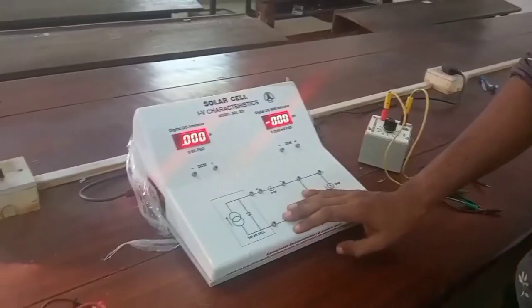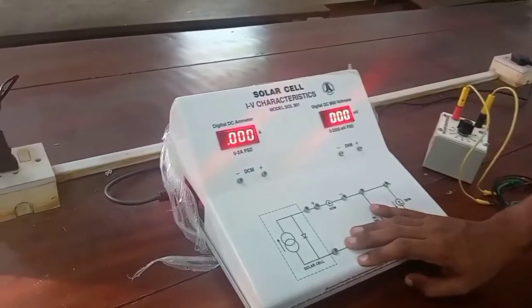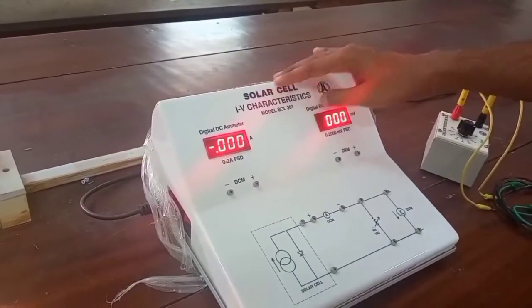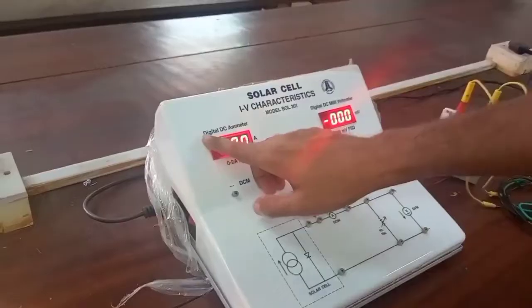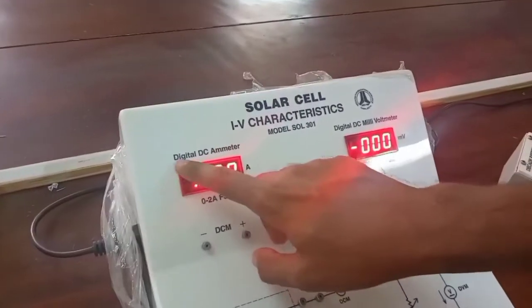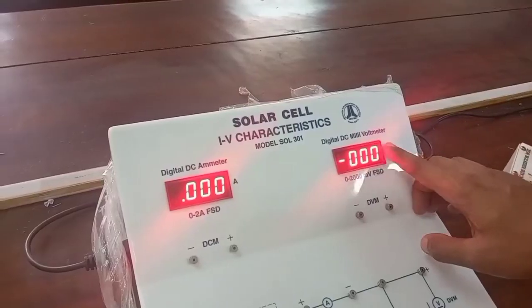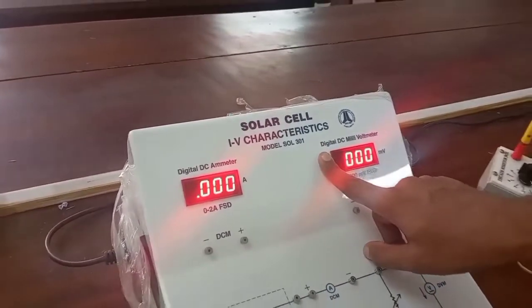Solar Cell IV Characteristics. Today we are going to do this experiment: Solar Cell IV Characteristics. This is the solar cell experiment setup. It consists of a digital DC ammeter and a digital DC millivoltmeter, and a solar panel.